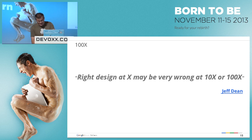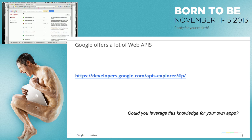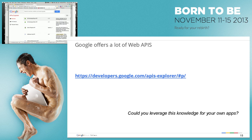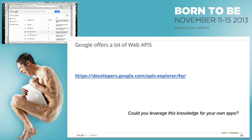I don't know if you know Jeff Dean, but he's a very famous Googler — you can find things about him on the web, very, very funny. At Google we offer a lot of web APIs. So I'm using the API Explorer for Google. You can have ad exchange buyer, BigQuery APIs, Book API, Calendar API — and we can scroll down. We offer a lot of APIs that you can use in your Android or iPhone apps.